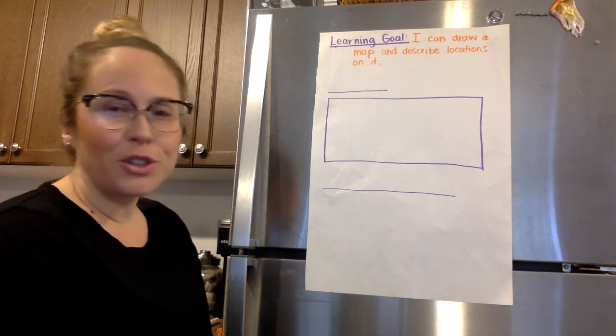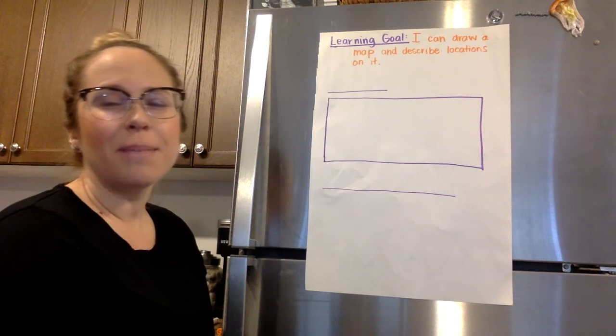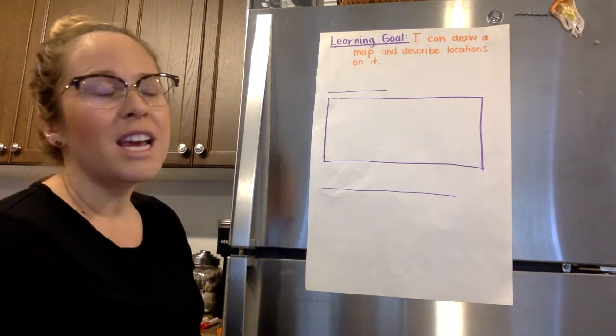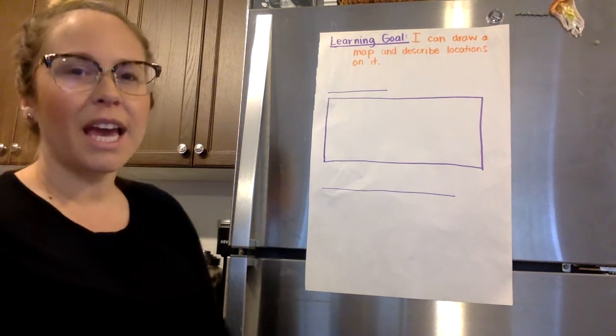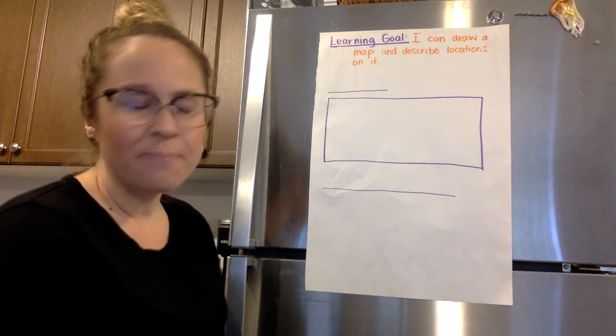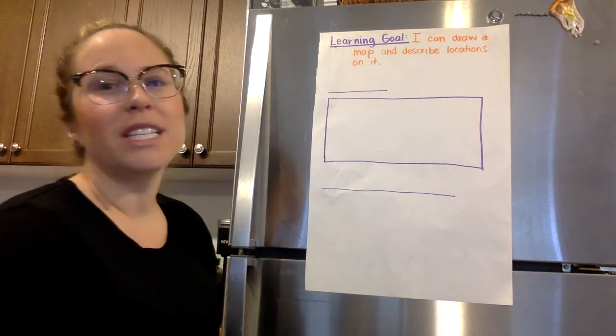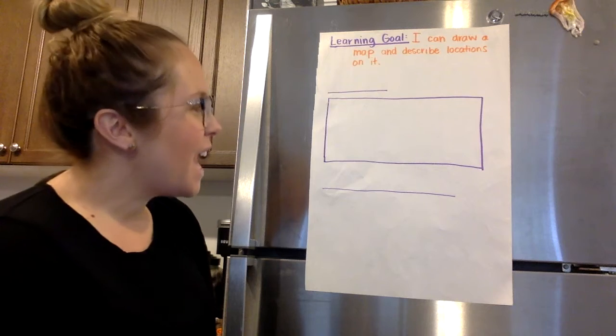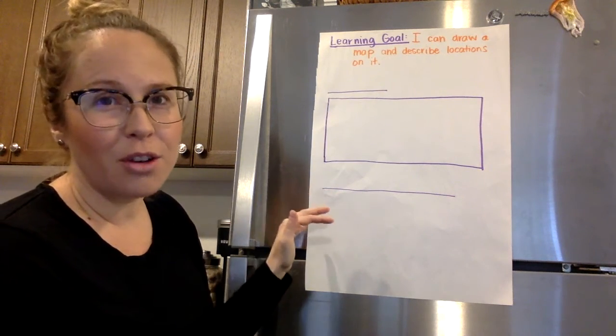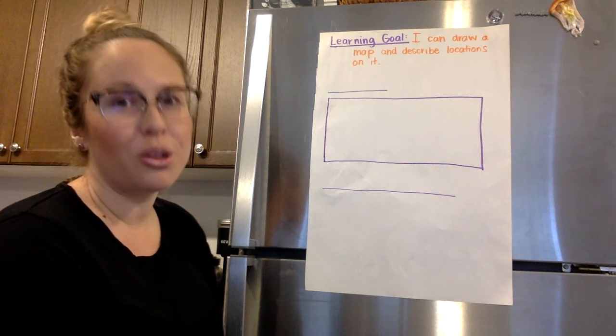So your very first job is to draw a map of one floor of your house. Now some people only have one floor to begin with, some people have two floors, some people have three floors, but it could get kind of complicated if you try to draw all three floors. So I want you to choose one floor of your house and you're going to draw a map of it and you're going to label it. And then you're going to tell me how to get from one spot in your house to another using that positional language that we learned about yesterday.